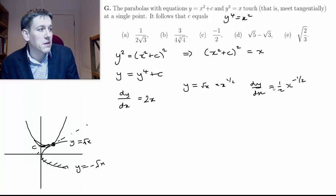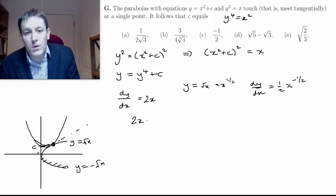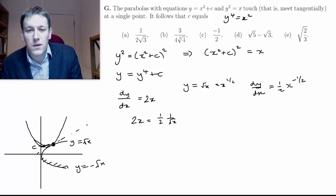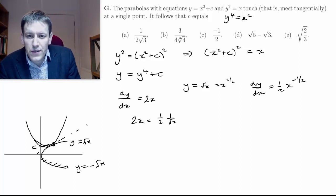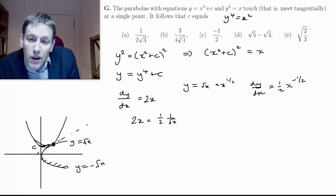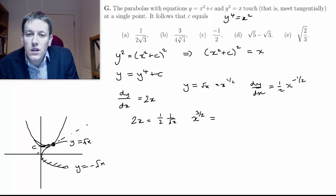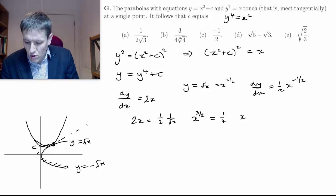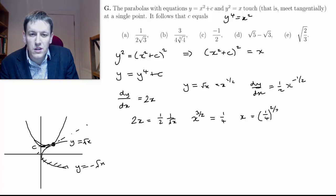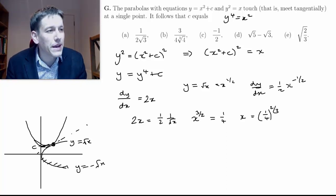So these two gradients are going to be equal where 2x = 1/2 x^(-1/2), so 1/2 times 1/√x. If I multiply through by √x here, I get x√x or x^(3/2) is equal to 1/4. So I need to raise to the power of 2/3, so x is equal to (1/4)^(2/3). So I've got my x value.